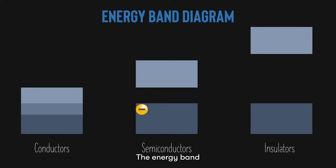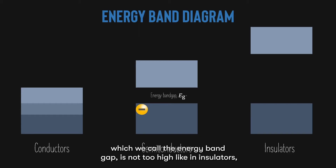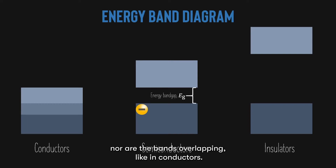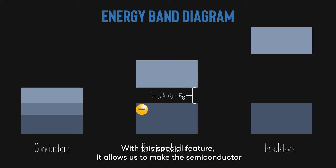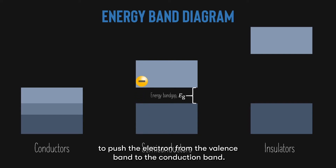The energy band diagram of semiconductors is just right in the middle. Semiconductors are not really conductors, nor are they insulators. The distance between the conduction band and valence band, which we call the energy band gap, is not too high like in insulators, nor are the bands overlapping like in conductors. With this special feature, it allows us to make the semiconductor conducting by just providing a little energy to push the electron from the valence band to the conduction band.